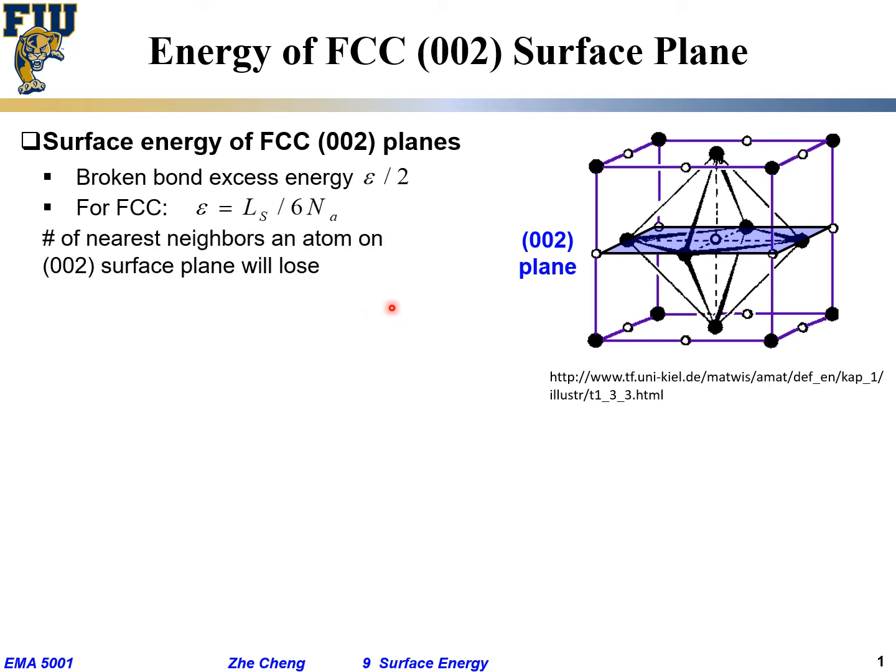Now let's count, let's do the counting. The number of nearest neighbors for a specific atom on this (002) surface plane will lose, if the crystal is cut along this (002) plane. For any single atom within this plane, how many of its nearest neighbors will be lost? Let's consider A atom here. When I cut between here and exposing this (002) plane, do you see A1? The bonding between A and A1 would be broken.